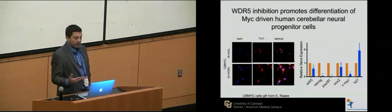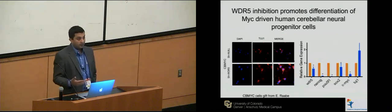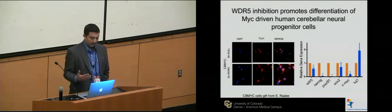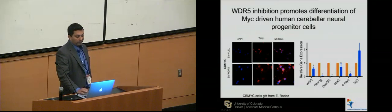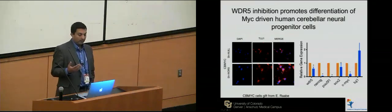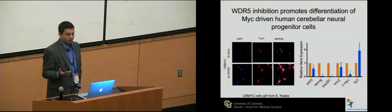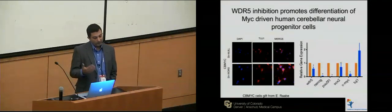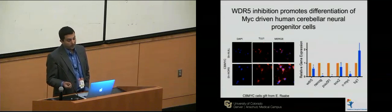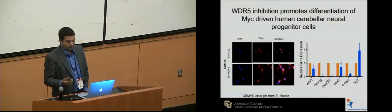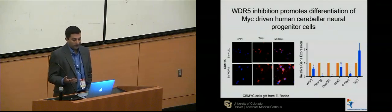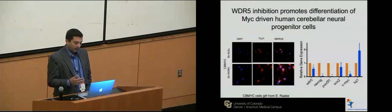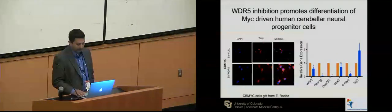In a limiting dilution assay to look at self-renewal, if we seed 31 wells with a single cell, 22 of 31 form new neural spheres under null conditions, but only 12 of 29 under WDR5 knockdown — suggesting a defect in self-renewal. When we do this in human cerebellar neural stem cells transduced with MYC (immortalized but not transformed), knocking down WDR5 causes them to form neurites and express TUJ1, a marker of neural differentiation. QPCR shows pluripotency genes like NANOG, OCT4, and SOX2 all significantly decrease with WDR5 knockdown, while TUJ1 goes up — indicating a switch from self-renewal to differentiation.